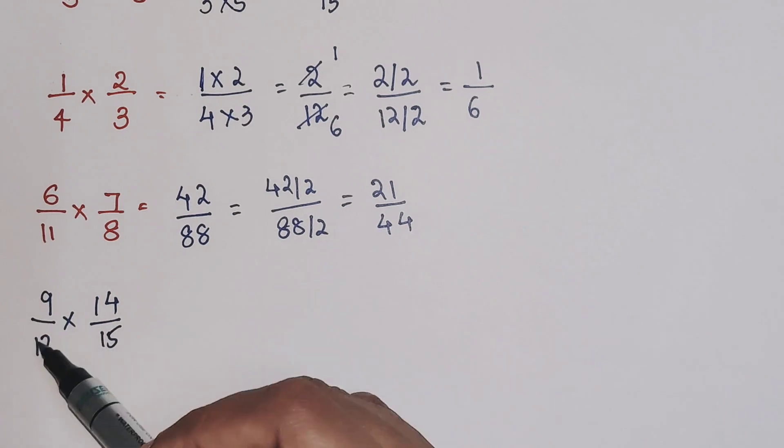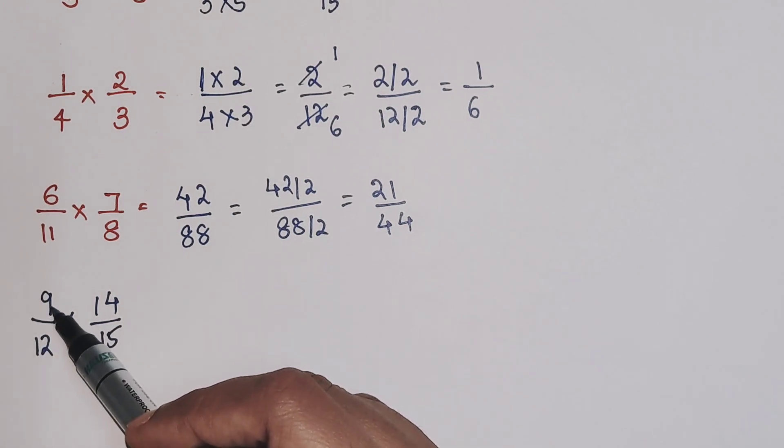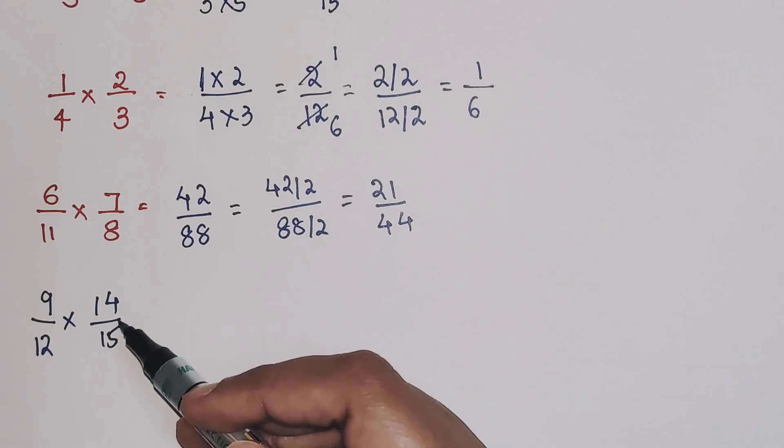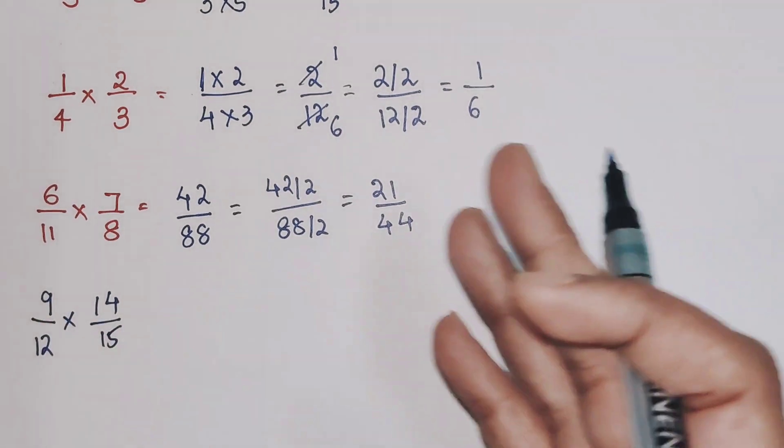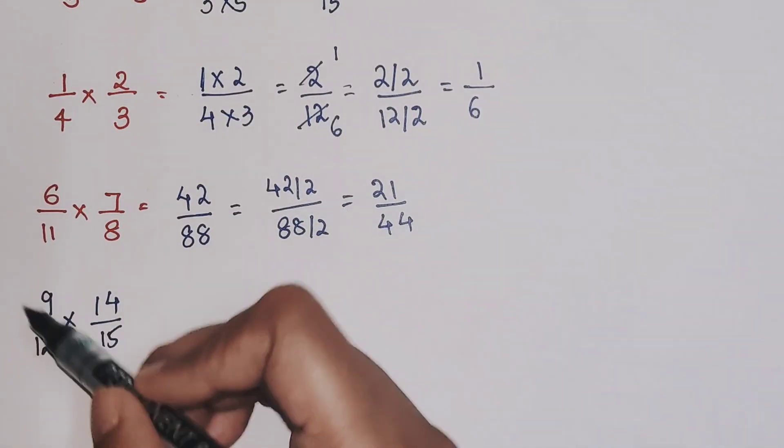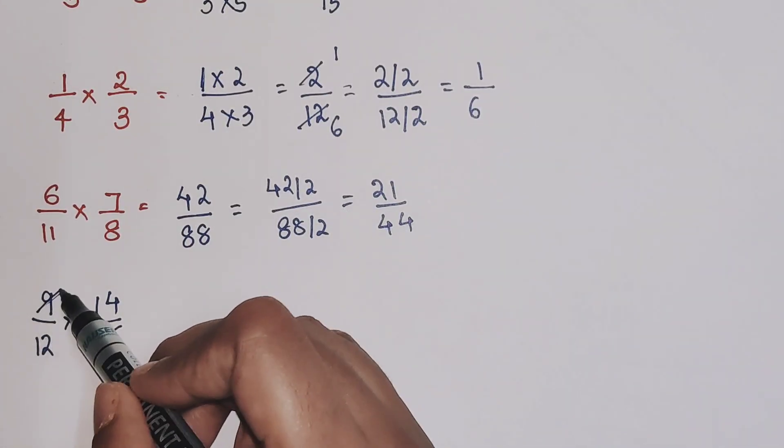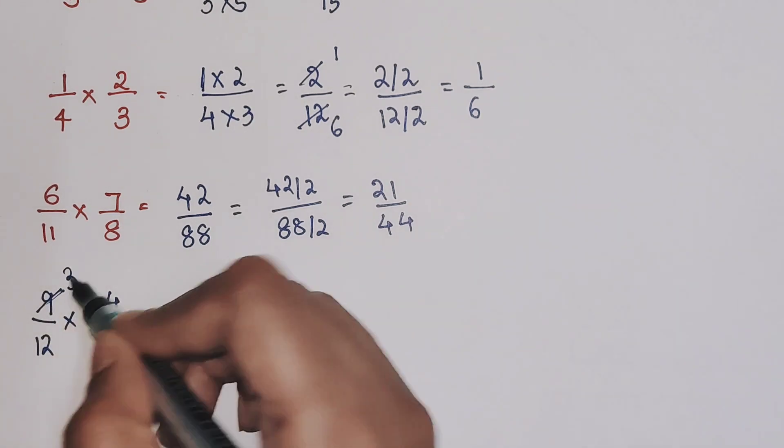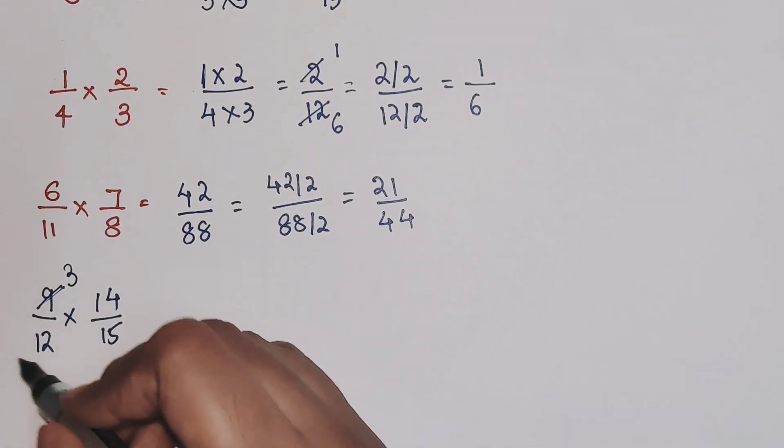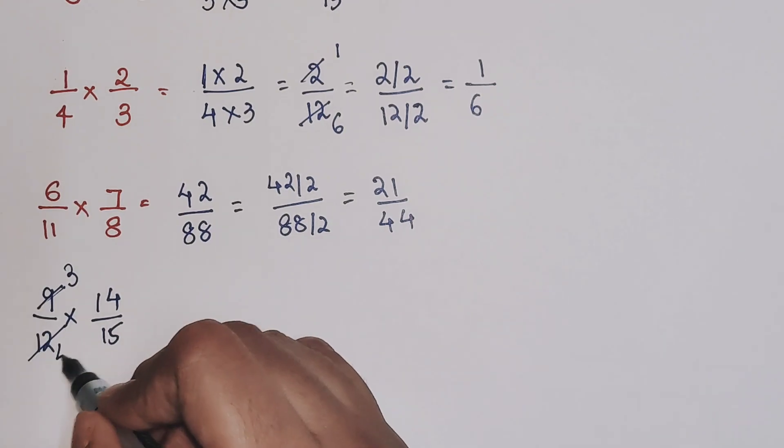When you look closely, I can say that 9 and 12, both of them are going in which table? 3 table. So I will divide both of them by 3. Now I am not going to write this step. I am going to do this orally. So we get, when you divide 9 by 3, I am going to cancel 9, I am left with 3. Similarly if I divide 12 by 3, I am left with 4.